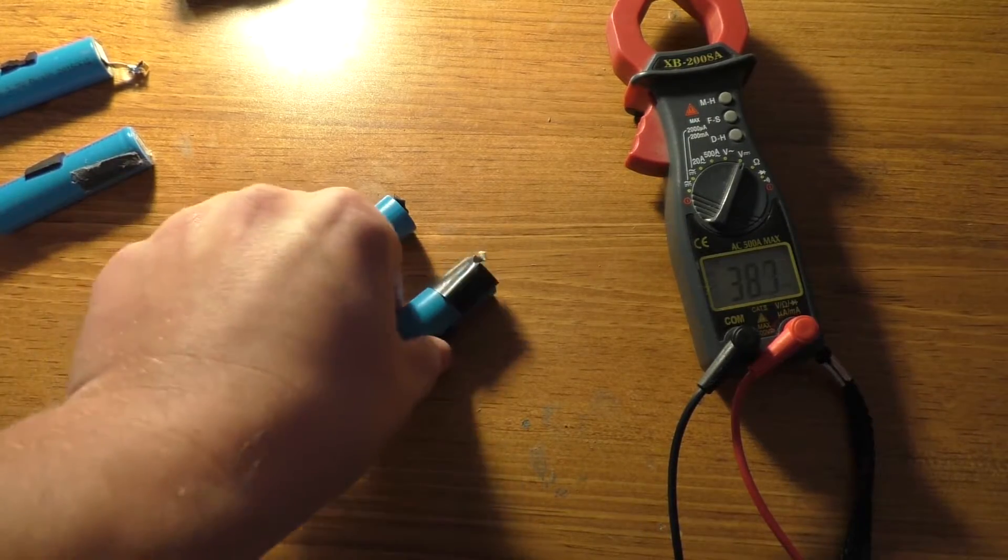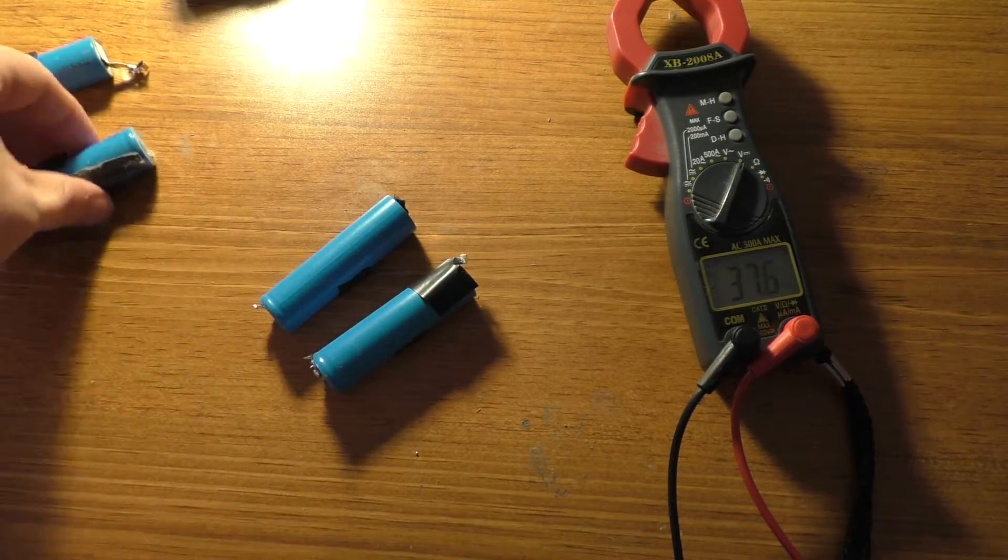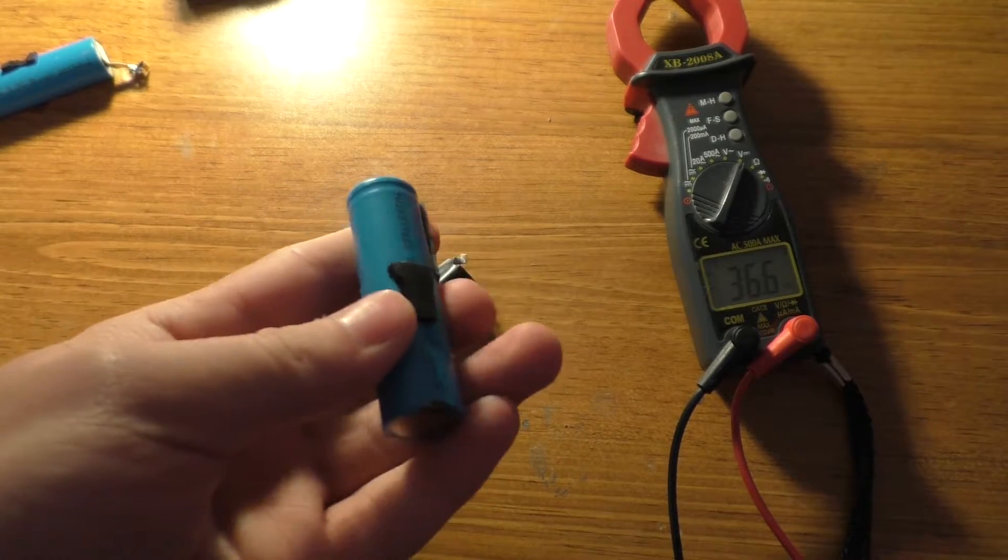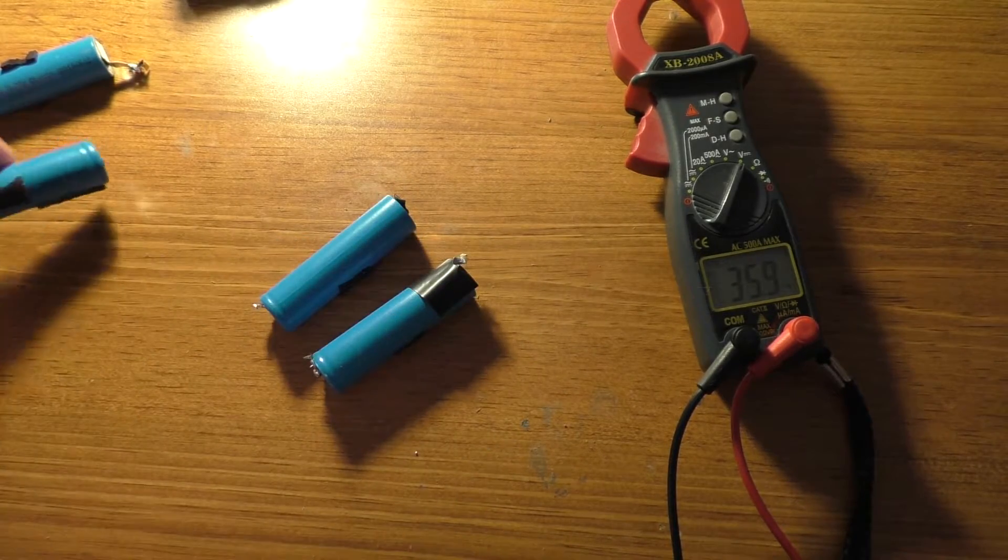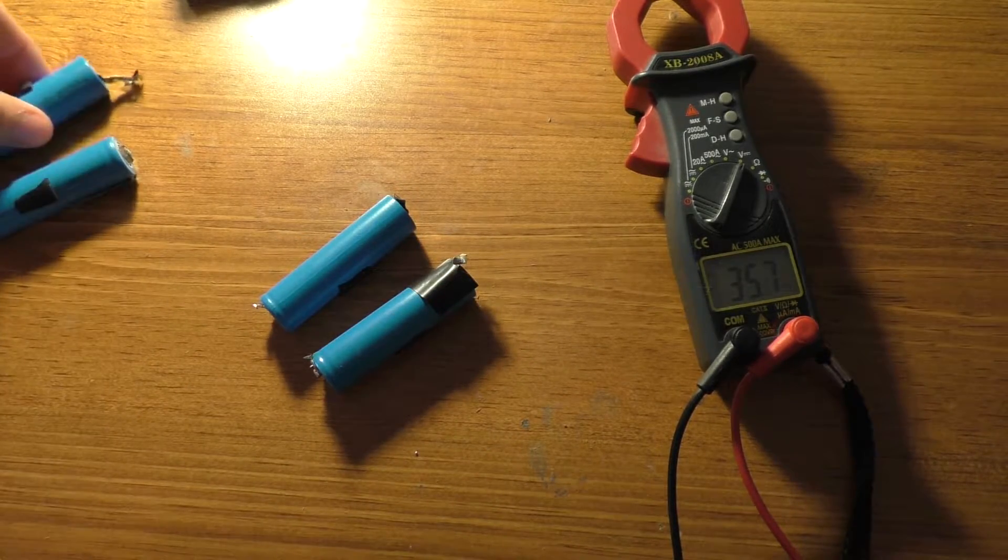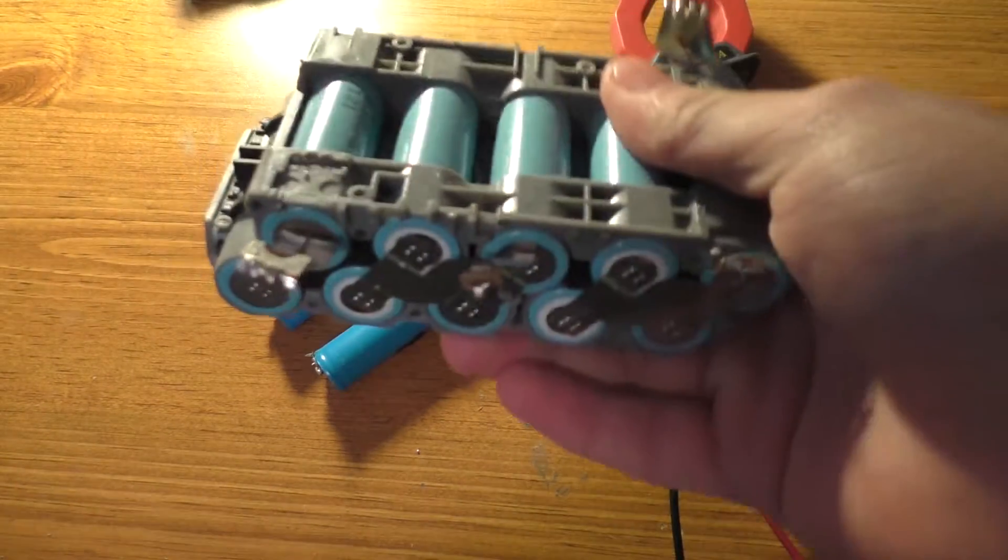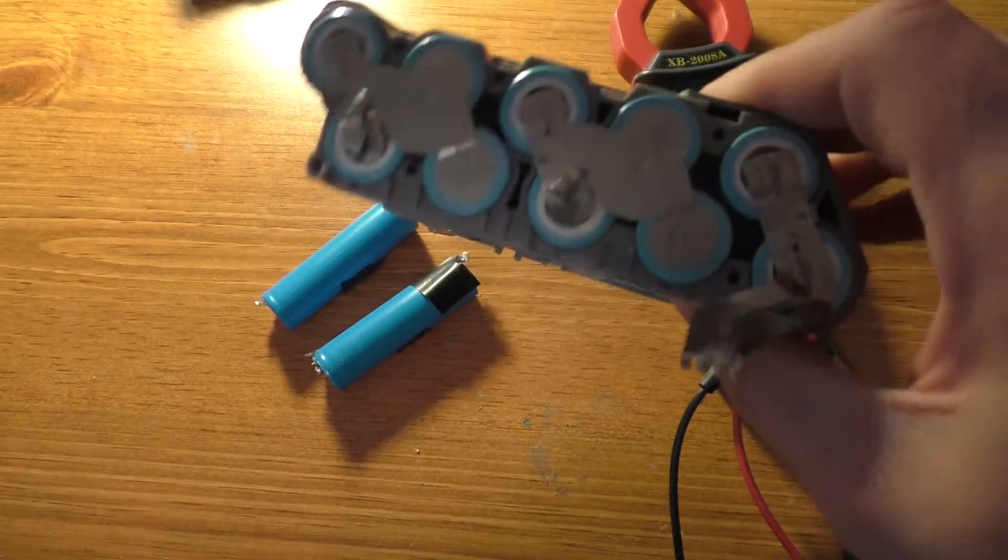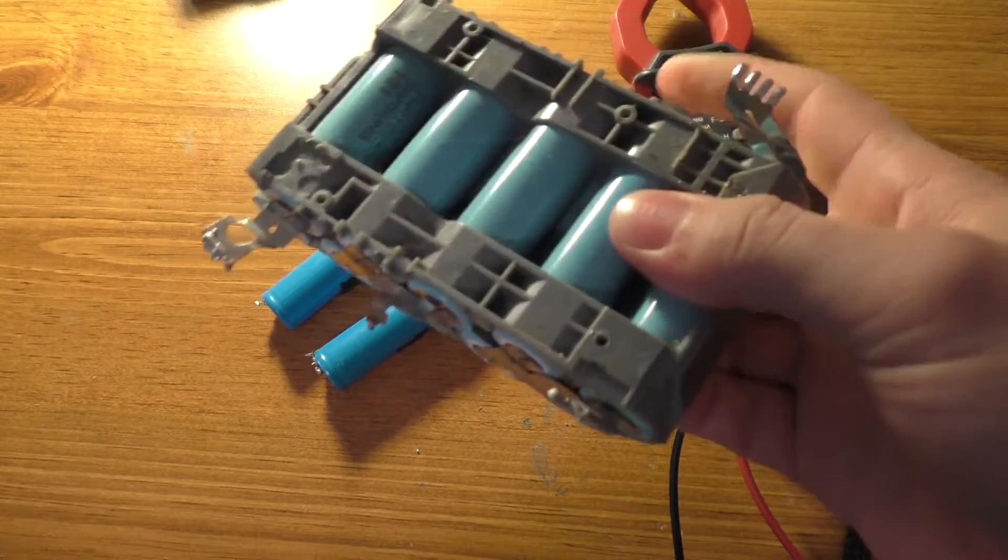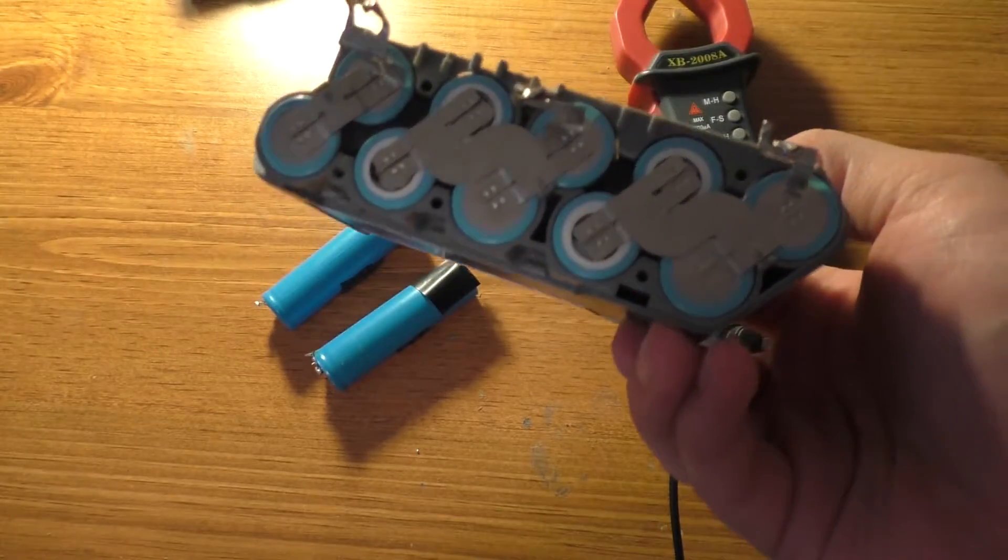Alright, so what I'm going to do is charge these two cells up. These two are probably going to be garbage and not usable at all anymore. I'm still not entirely sure what happened to this pack. Alright, so I actually do have some replacement batteries here. This is in the form of an old drill battery, which the protection circuit board gave out on it.